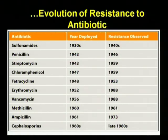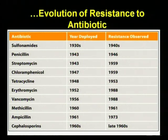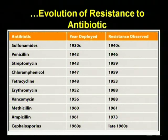Now let us look at the evolution of resistance to antibiotics. As you can see in the figure, sulfonamides were discovered in the 1930s and within 10 years the first resistance was observed. Penicillin was discovered in 1943 and by 1946 — within just 3 years — resistance was observed. So within a very short time, organisms evolved mechanisms for resistance.